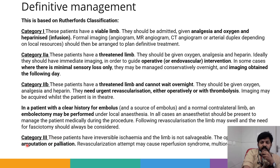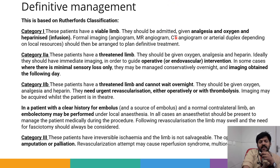Category 3 (irreversible ischemia): the limb is not salvageable. Options are amputation or palliation. Revascularization should not be attempted as it may cause reperfusion syndrome leading to multi-organ failure and death. In exams, you will get clinical scenarios requiring you to identify which Rutherford category a patient falls into based on clinical features, and advise treatment accordingly.